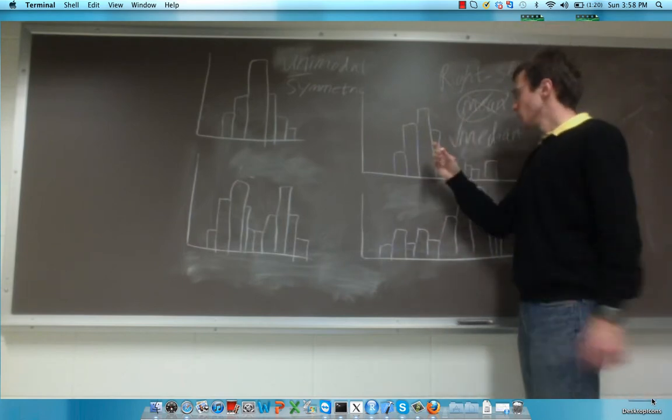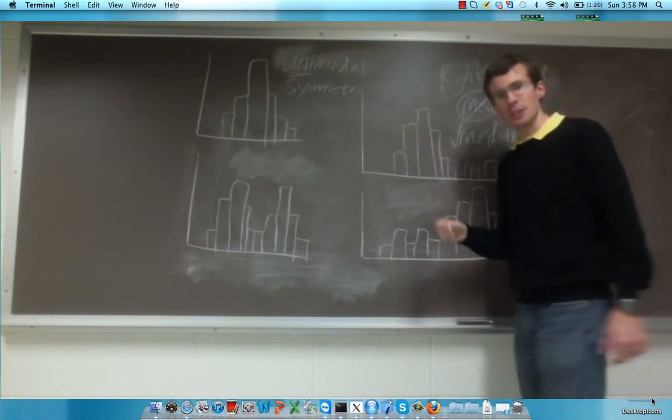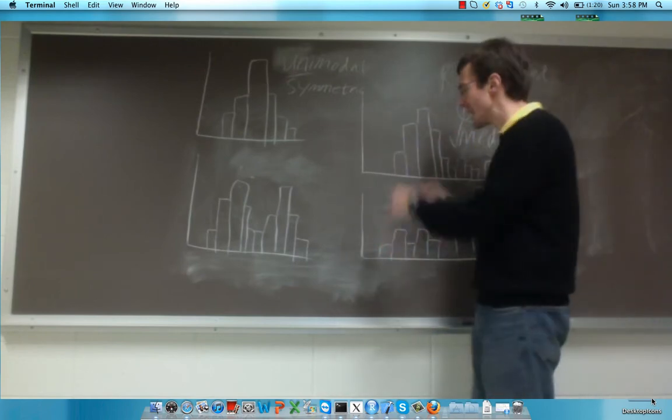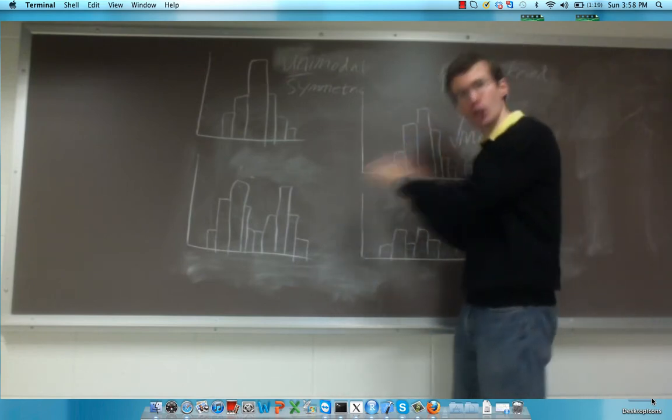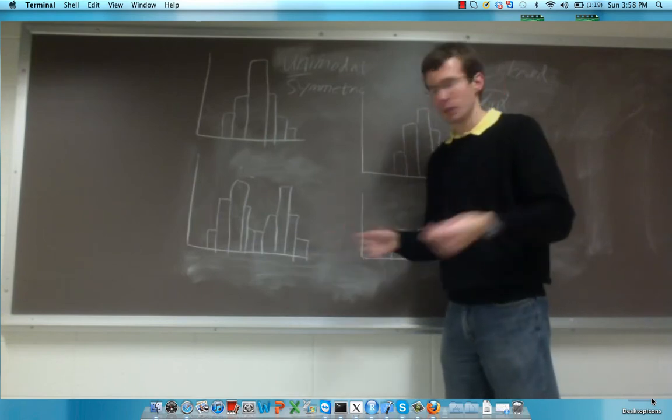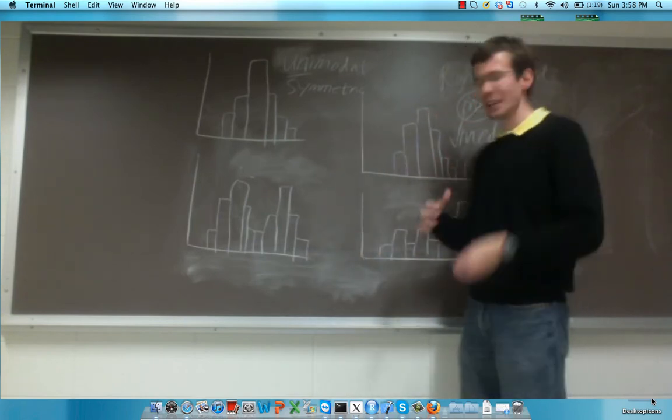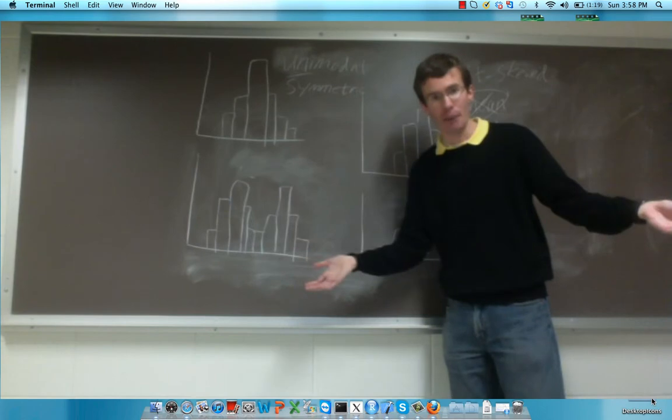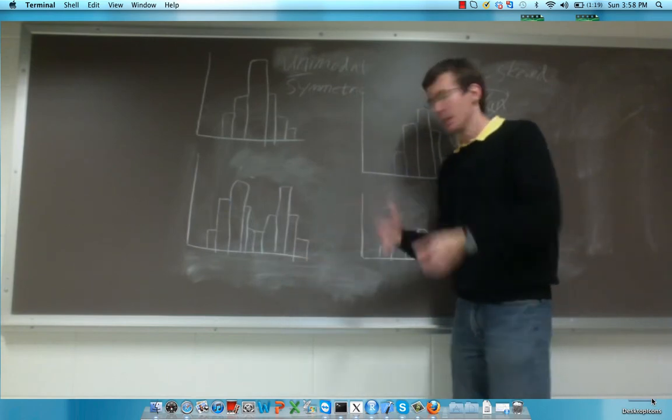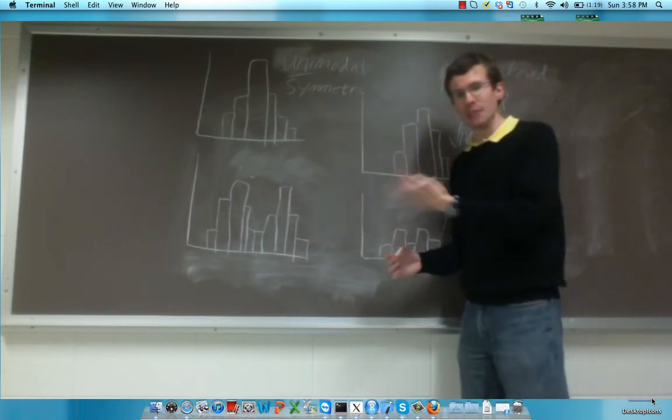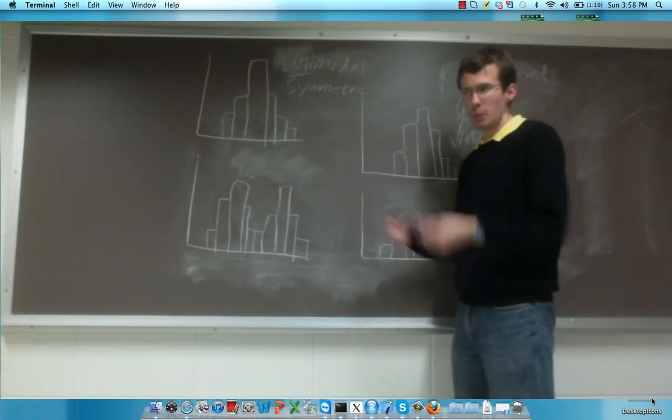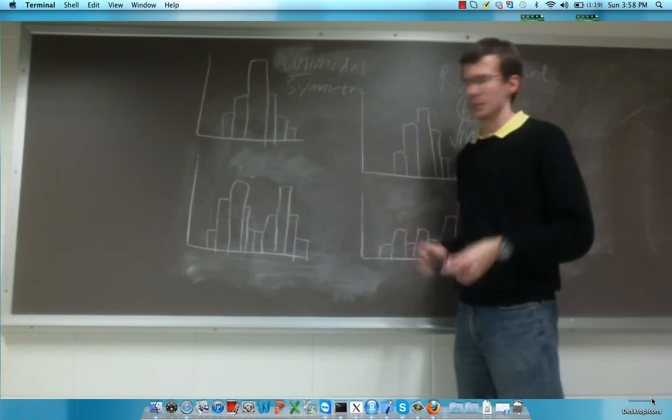And this is particularly prominent in distributions that have a floor effect, where you can't go below a certain number, let's say zero, and you can see this in cases like income or reaction time, where you can't have a negative income and you can't have a negative reaction time. Maybe you can have a negative income, but I haven't seen it yet.